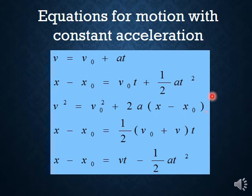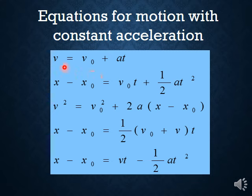Taking those two equations and rearranging gives five different equations for motion with constant acceleration. There are five variables: v, v₀, a, t, and (x − x₀) — that is, velocity at time t, initial velocity, acceleration, time, and displacement. Each equation is missing one of those five terms, and they cover every other possible combination.